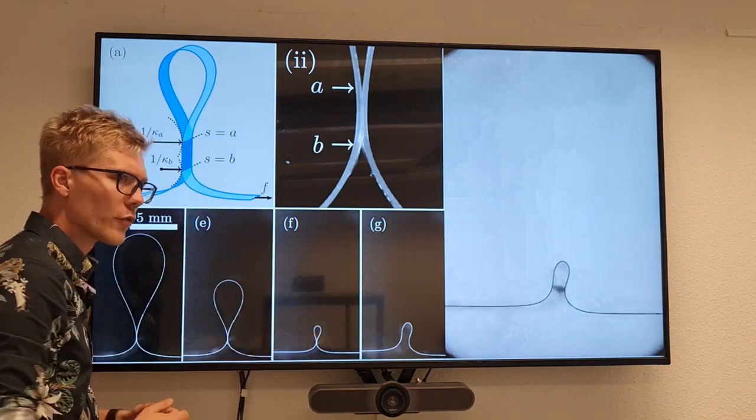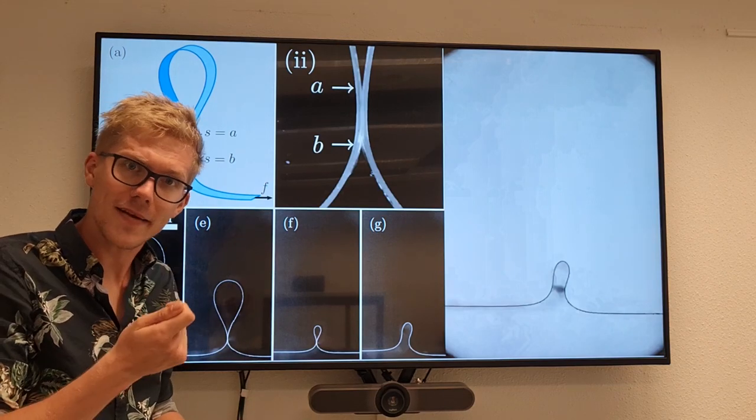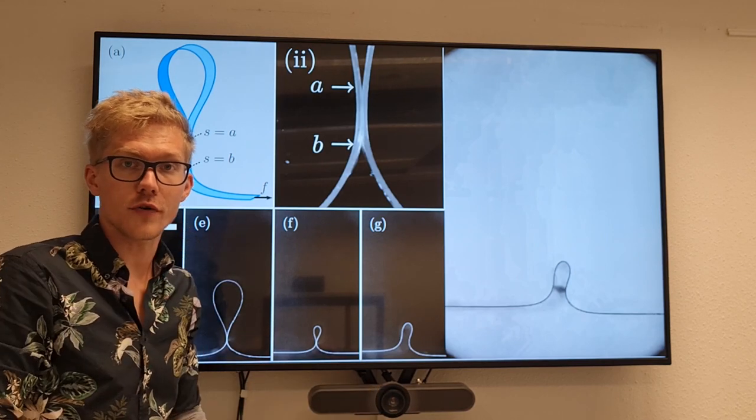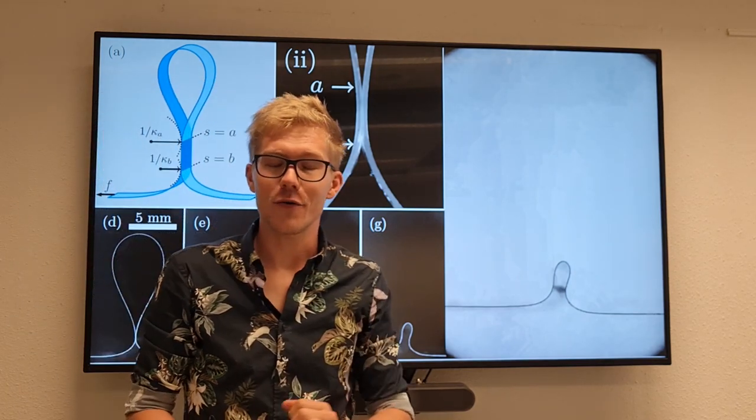However, this stops when the loop reaches a critical size where bending energy inside the loop can overcome the adhesive barrier in the contact and the loop will break open. So this is how you unloop a loop.